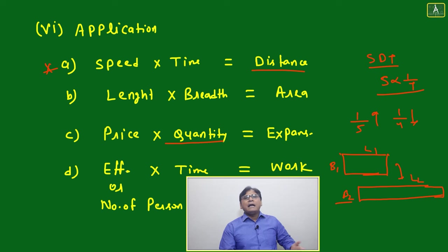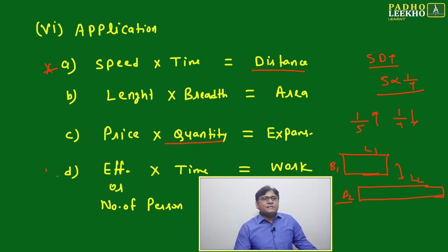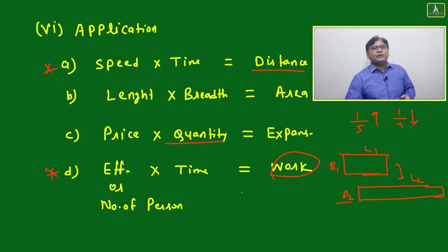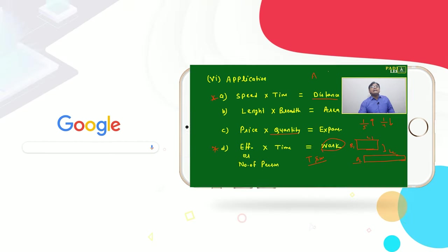Next is your efficiency into time. Like any person efficiency or time - just suppose same work is done by 20 persons in certain time period. Again same work will be done by some other number of persons, then how much time will it take? This is also again your time and work separate chapter are there, almost all separate chapters are there. But finally concept is inversely proportional.